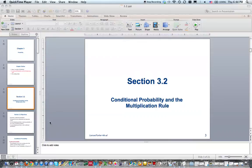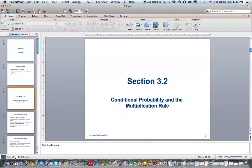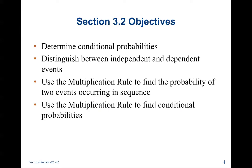Section 3.2: Conditional Probability and the Multiplication Rule. Today we are going to determine conditional probabilities, distinguish between independent and dependent events, use the multiplication rule to find the probability of two events occurring in a sequence, and use the multiplication rule to find conditional probabilities.